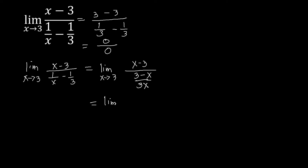So we have the limit of x minus 3, and then this denominator part — we are going to have this as a single fraction. By doing that, we have to do something on the denominator. We can simply get the reciprocal of that and then proceed to multiplication. So the numerator, which is x minus 3, will be multiplying the reciprocal of the denominator, which is 3x over 3 minus x, as x approaches 3.